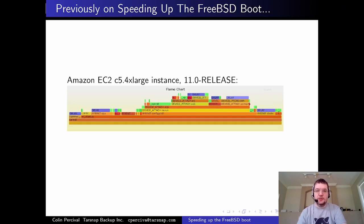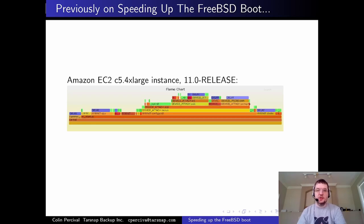This allowed me to generate flame charts of the FreeBSD kernel boot process. Here you see the 11.0 release flame chart throughout the kernel boot process. The blue blobs are delay calls, the green is printing to the console, and if you zoom in you can also see the names of all the functions.